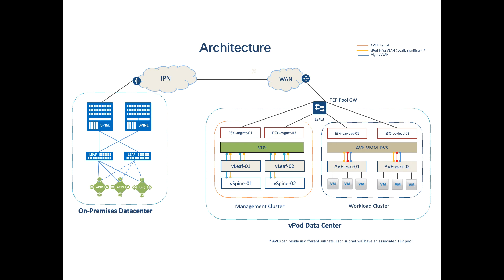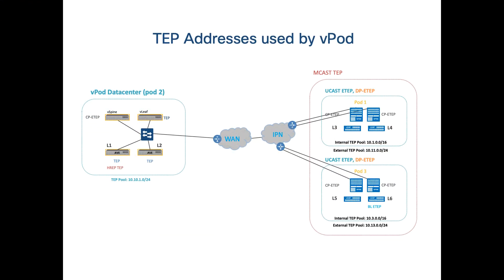That is exactly what we are going to do in the install we show you right now. Before the actual lab install, let's quickly talk about addressing so we are all on the same page. On the right-hand side is our physical fabric, and on the left-hand side will be the vPOD fabric. On the physical fabric we have two pods, and since we have two pods in a multipod situation, each pod would have its own internal TAP pool — 10.1.0.0/16 for pod one, and 10.3.0.0/16 for the other.